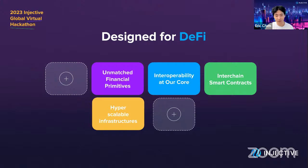Some of these primitives include on-chain order books, derivatives, binary options, and a self-executing smart contract layer. You can combine these primitives together in order to build truly innovative financial applications that would not be possible anywhere else.